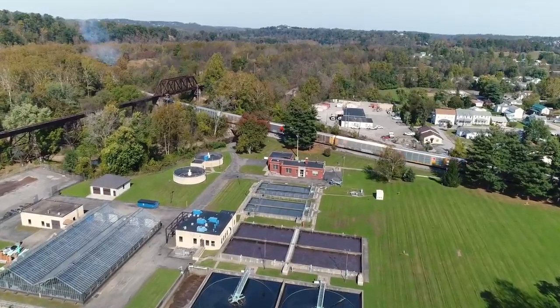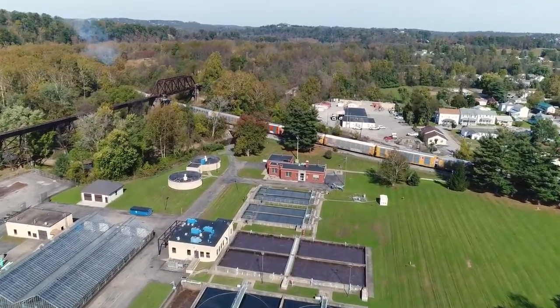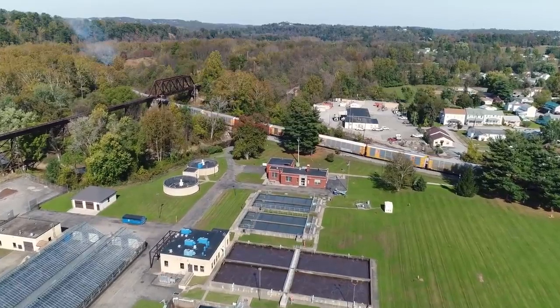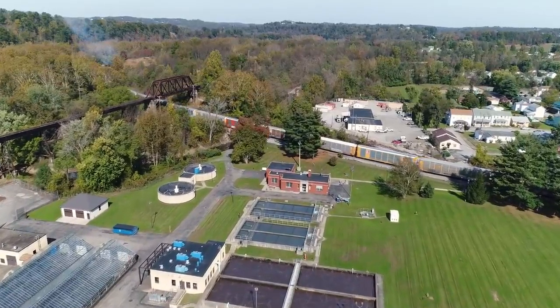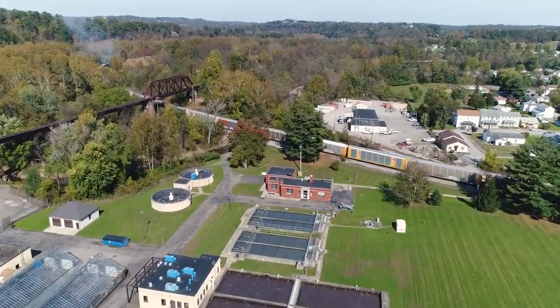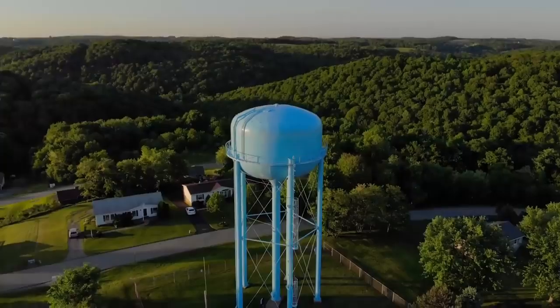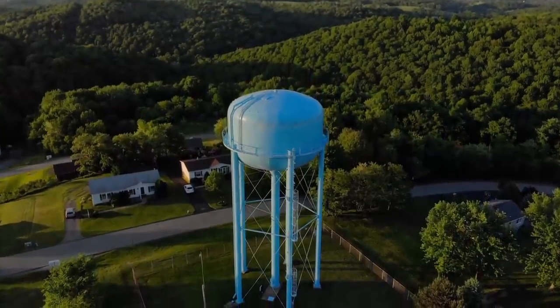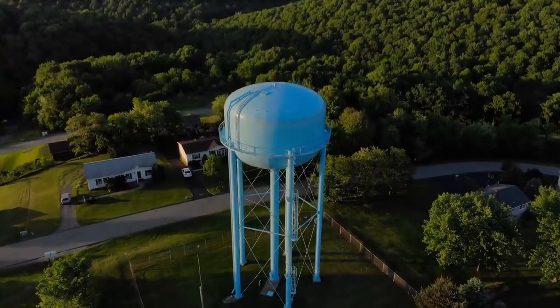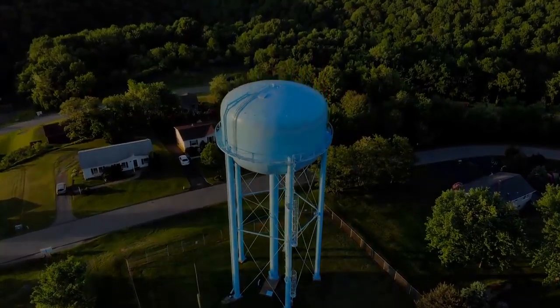So the job of finding enough water, making it safe to use, and then reliably distributing it to the system customers with almost no downtime is a monumental task that requires a lot of infrastructure. And probably the most visible component of a public water system is the elevated storage tank, also known as a water tower.